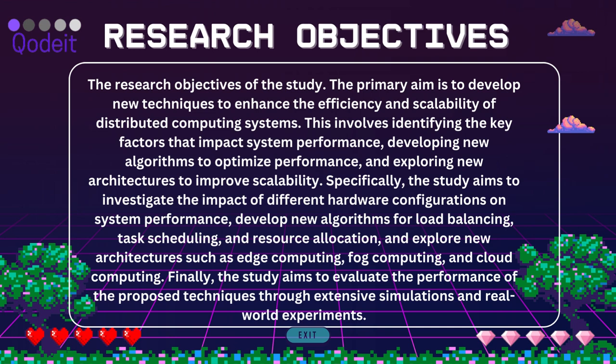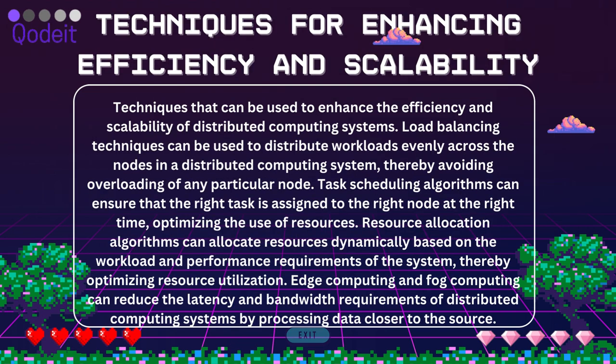Techniques for Enhancing Efficiency and Scalability. Load balancing techniques can be used to distribute workloads evenly across the nodes in a distributed computing system, thereby avoiding overloading of any particular node. Task scheduling algorithms can assign the right task to the right node at the right time, optimizing the use of resources.